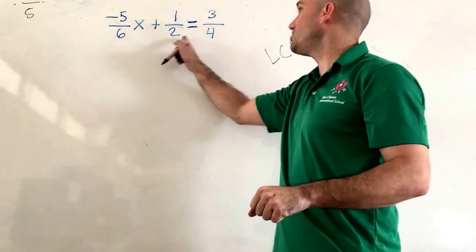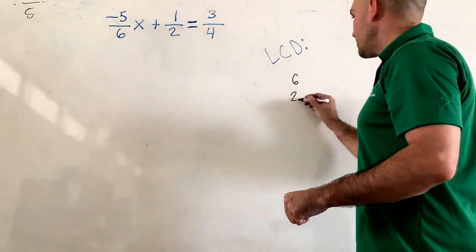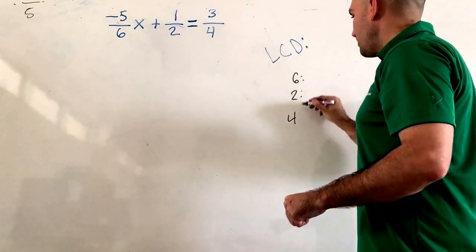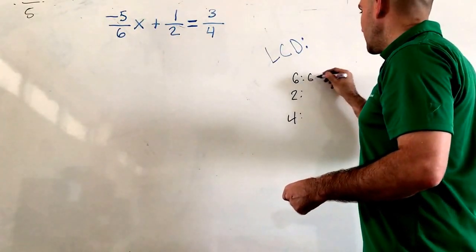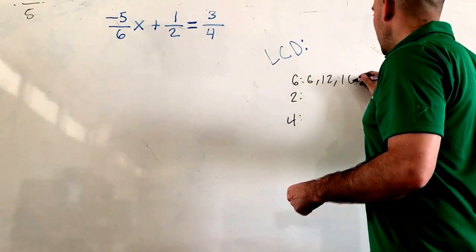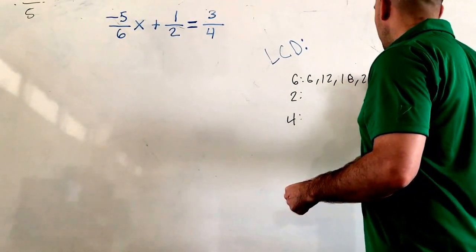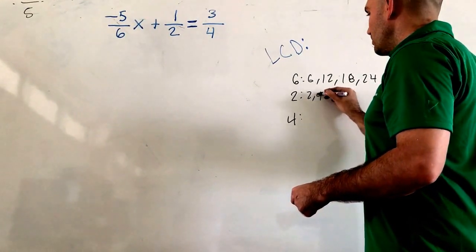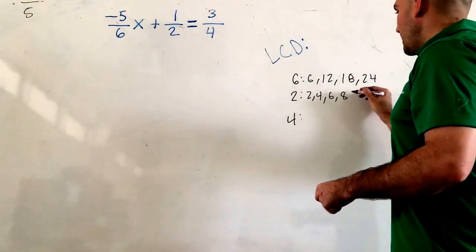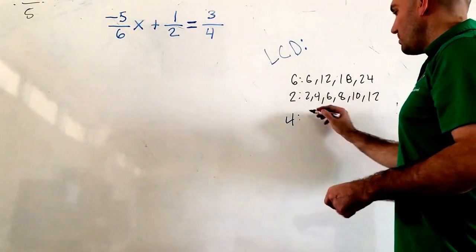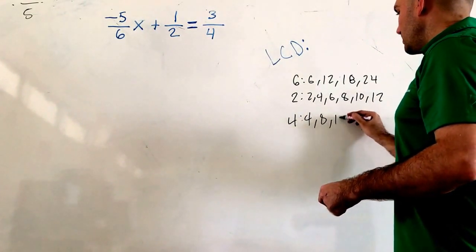So we need to find the LCD of 6, 2, and 4. So I take 6, 2, and 4, and I'm going to find the multiples. So we get 6, 12, 18, 24. 2, we get 2, 4, 6, 8, 10, 12. 4 is 4, 8, 12.